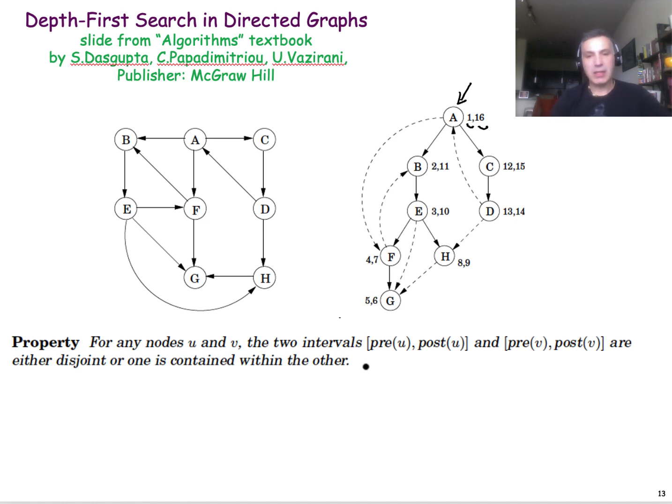There is something interesting here that I want you to note, and this is that for any nodes, let's say U and V, these intervals between the pre-timestamp and the post-timestamp of a node, are completely disjoint, or one of the two is contained in the other.